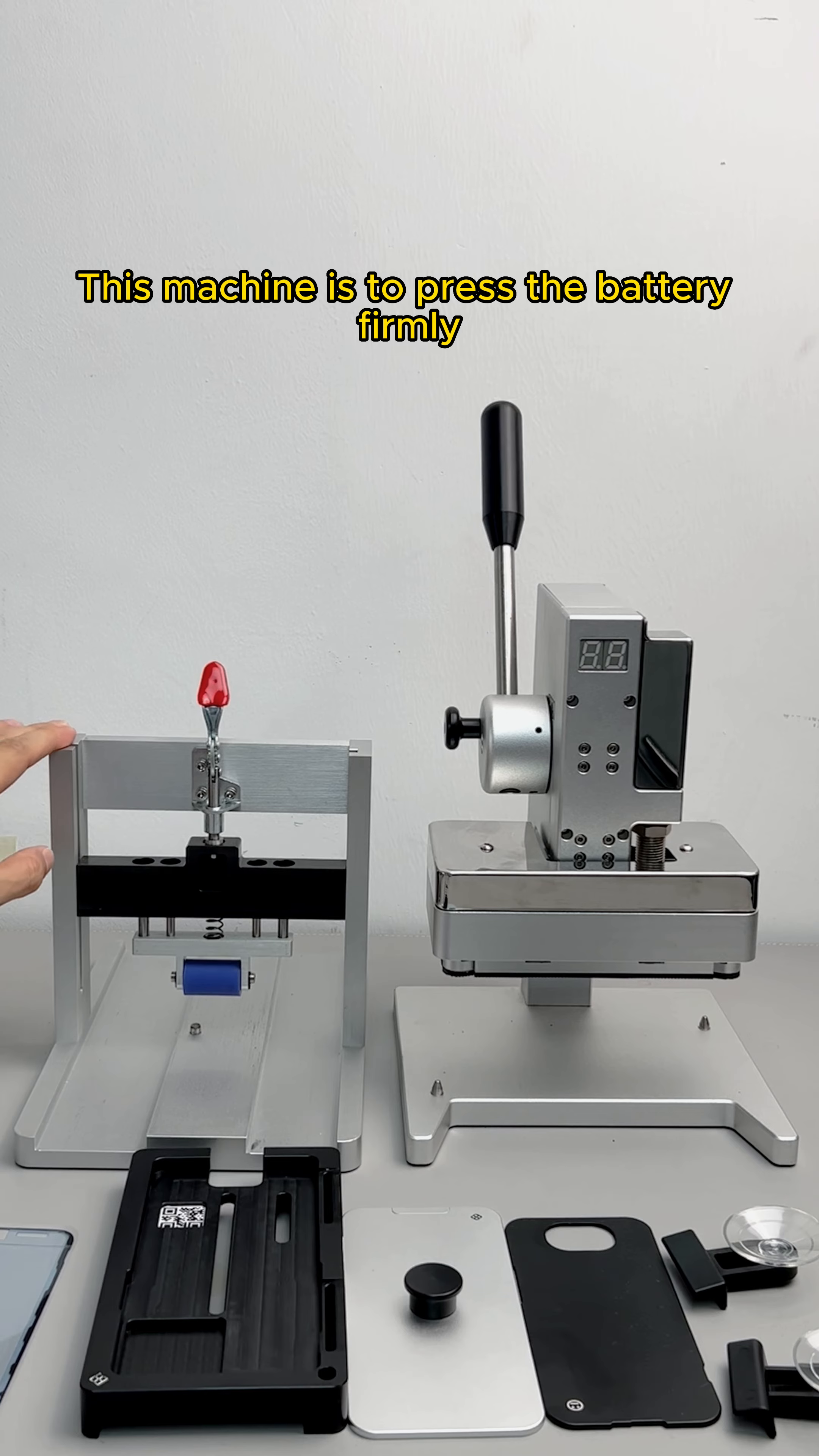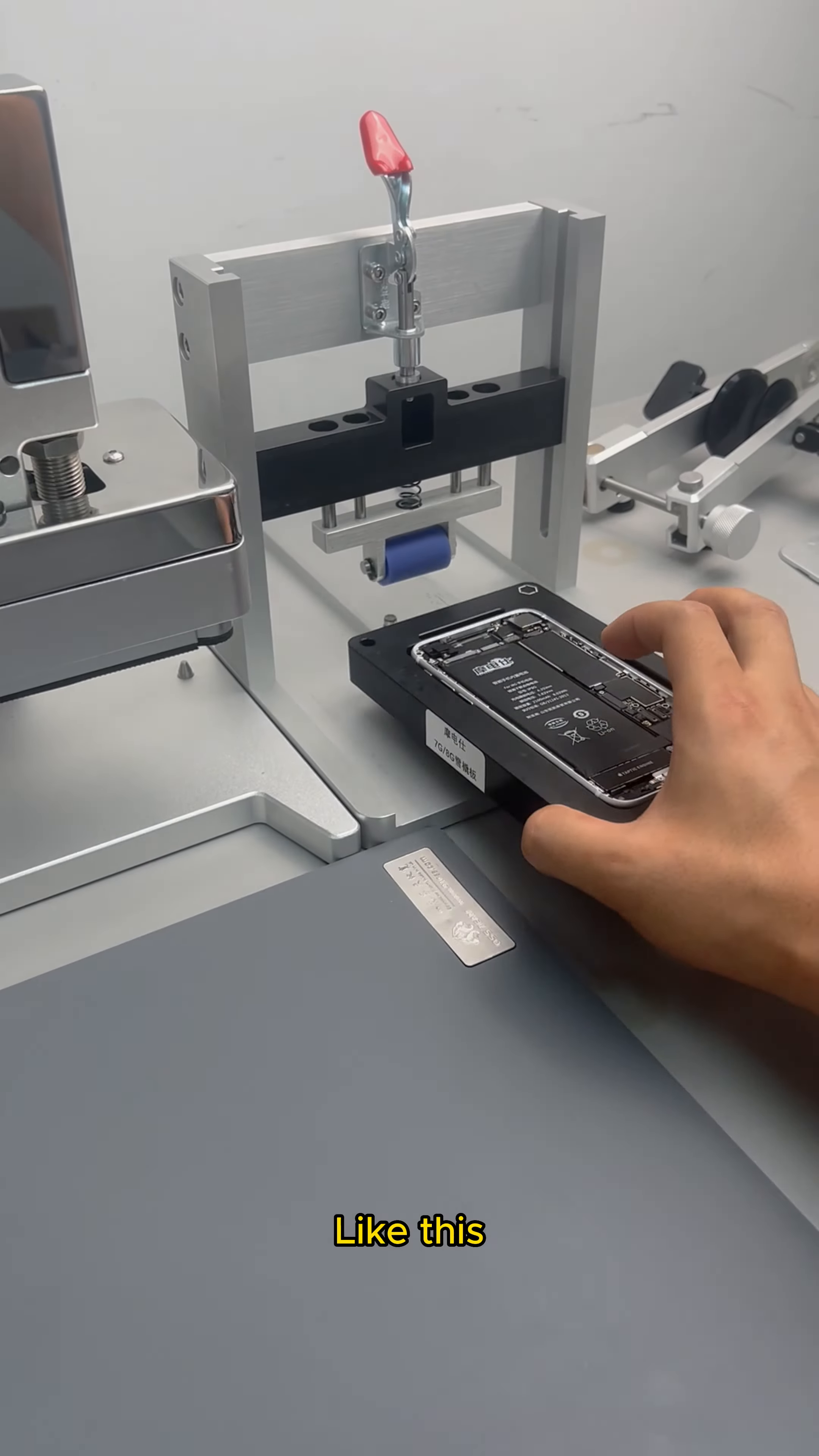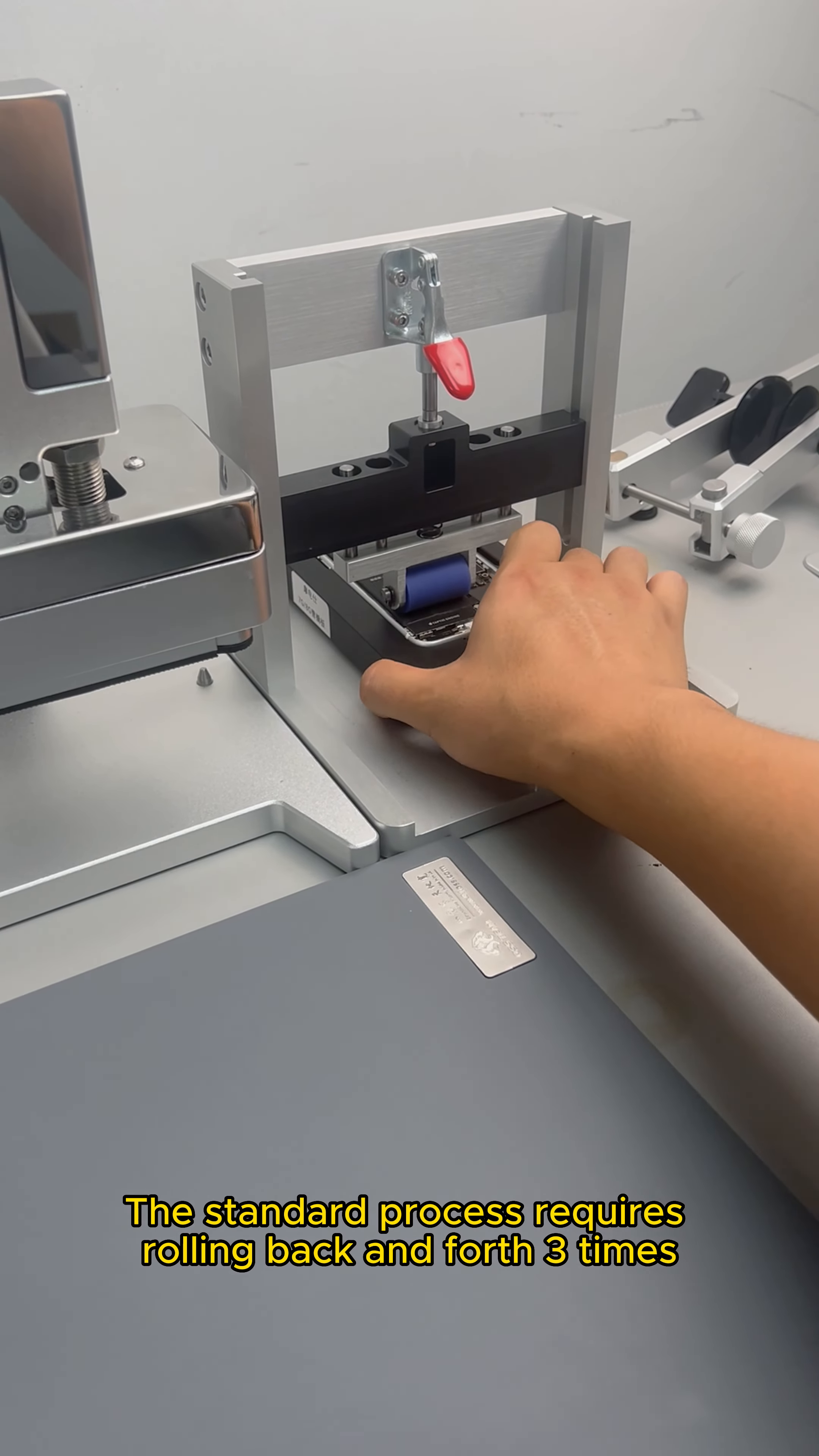This machine is to press the battery firmly. Put the phone in this fixture, then follow the guide rails into the battery press. Pull down the roller. The standard process requires rolling back and forth three times.